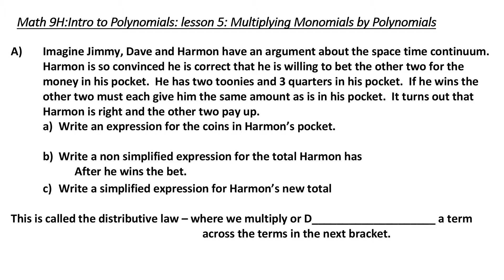Isn't this what everybody does on their Friday nights? Harmon is so convinced he is correct that he is willing to bet the other two for the money in his pocket. He has two toonies and three quarters in his pocket. If he wins, the other two must each give him the same amount. Turns out he's right.